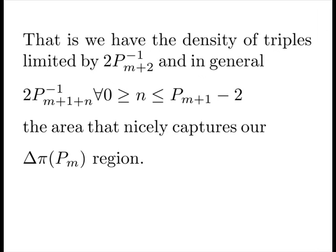That is, we have the density of triples limited by our next prime minus 1 times 2, and in general, for some formula from n primes away. And this area nicely captures our delta pi region, because we're expecting p primes there.